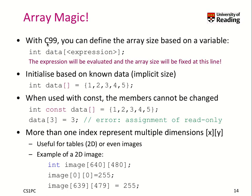With C99, we can define an array size based on a variable. That means you can have int data and then use an expression in the brackets — something like data[x] — and at runtime this expression will be evaluated and the array size will be fixed at that particular line of the definition.